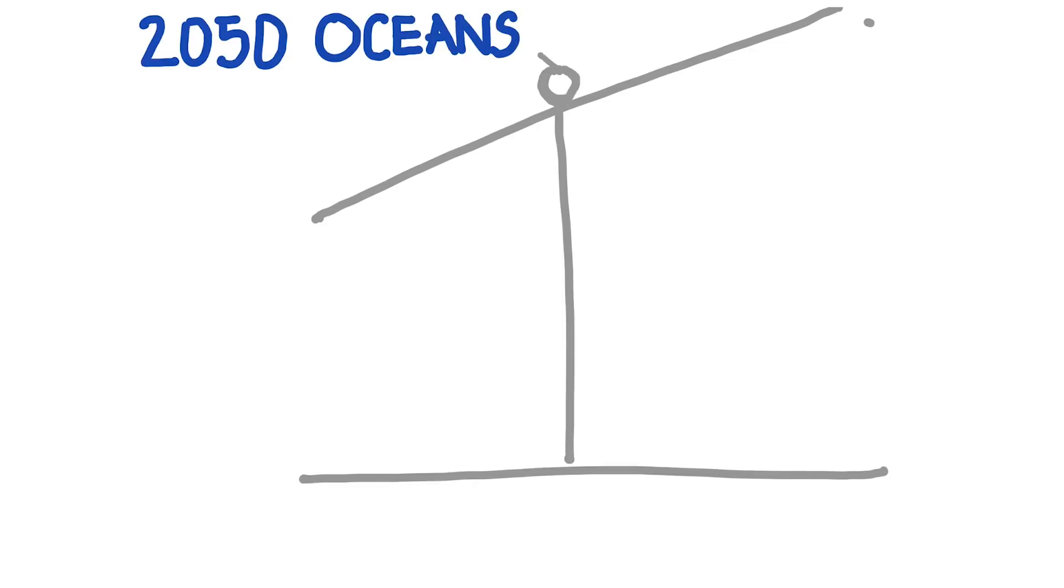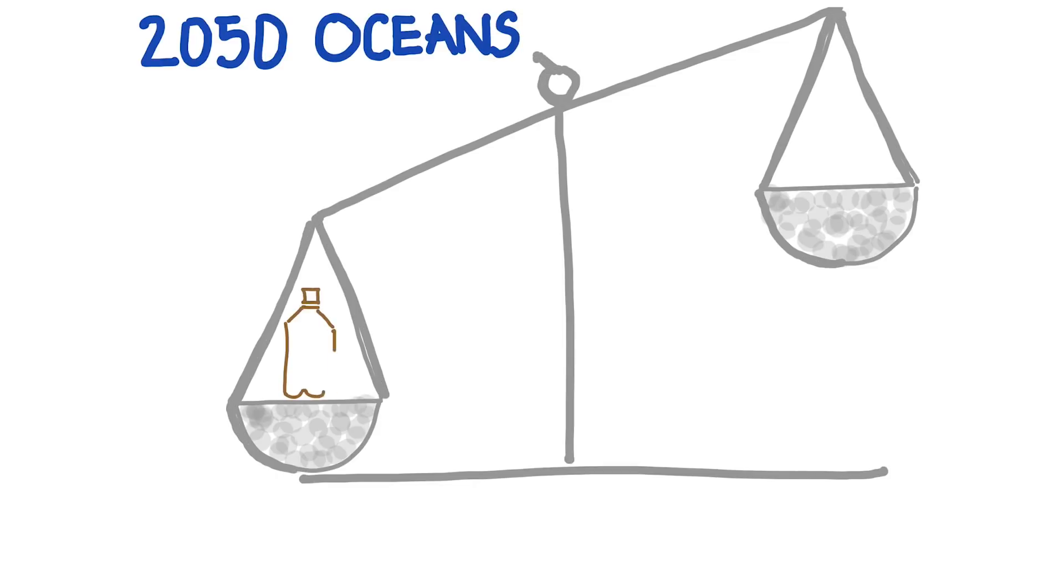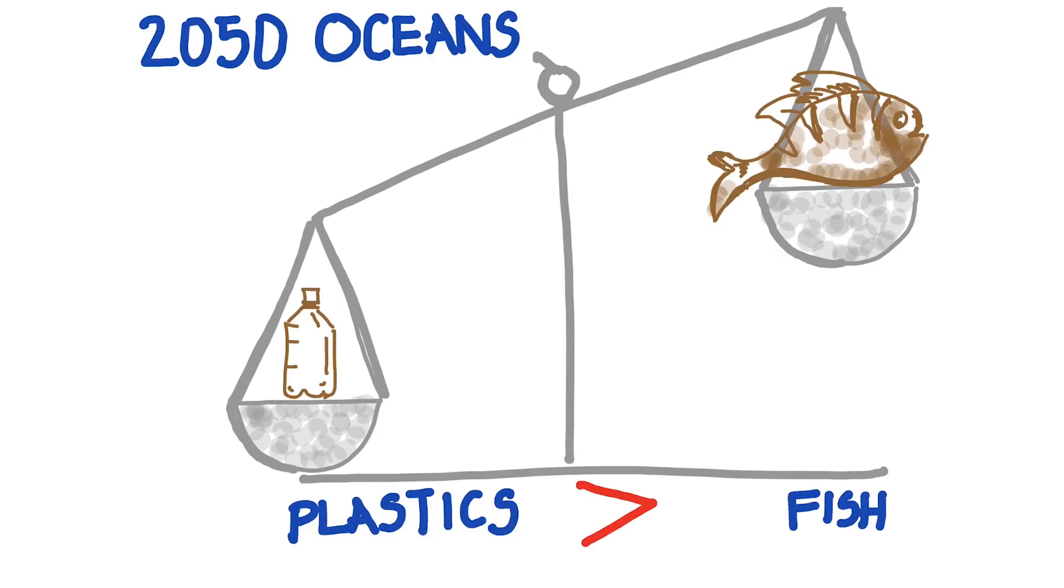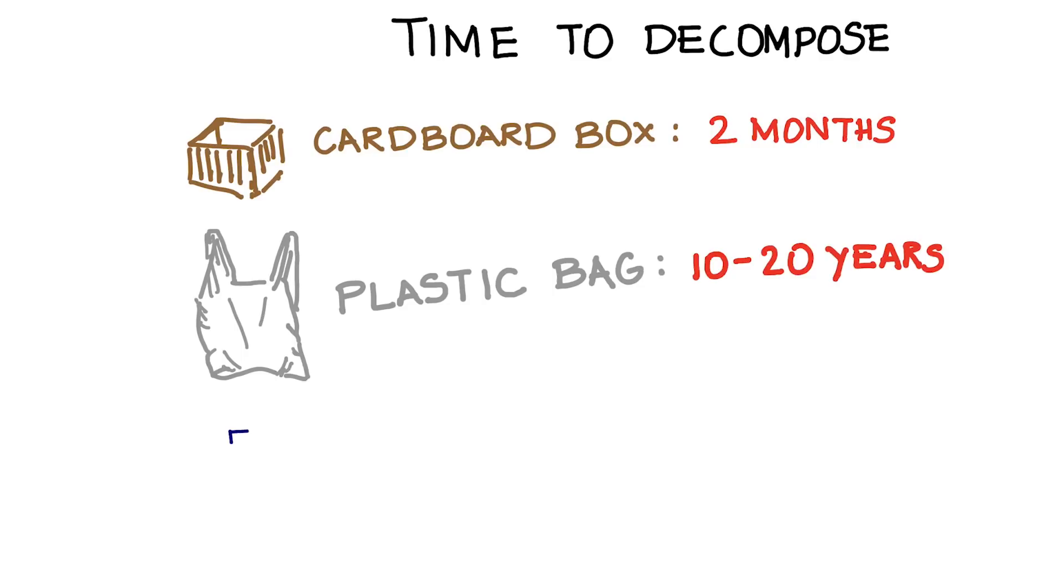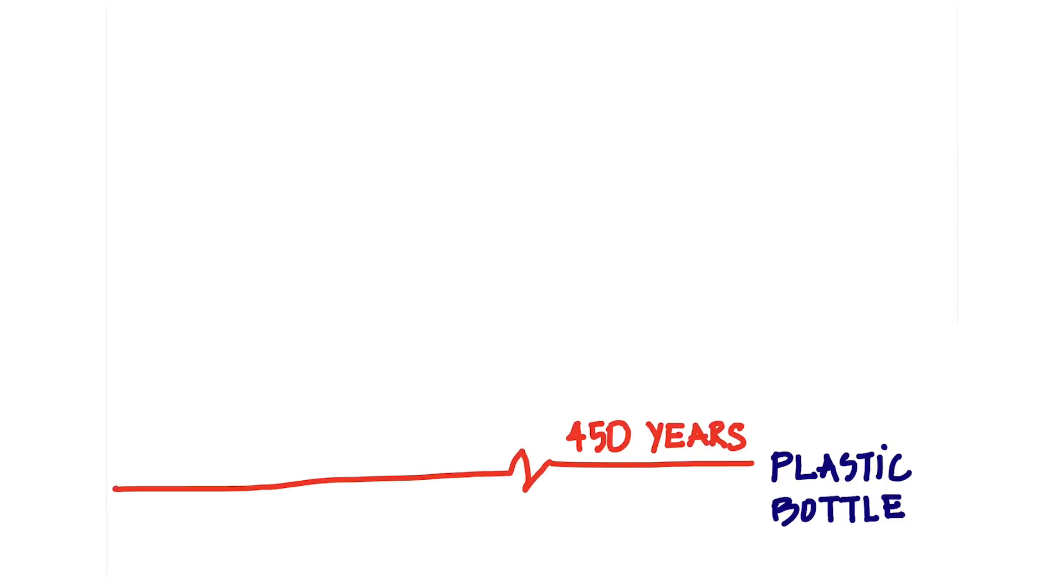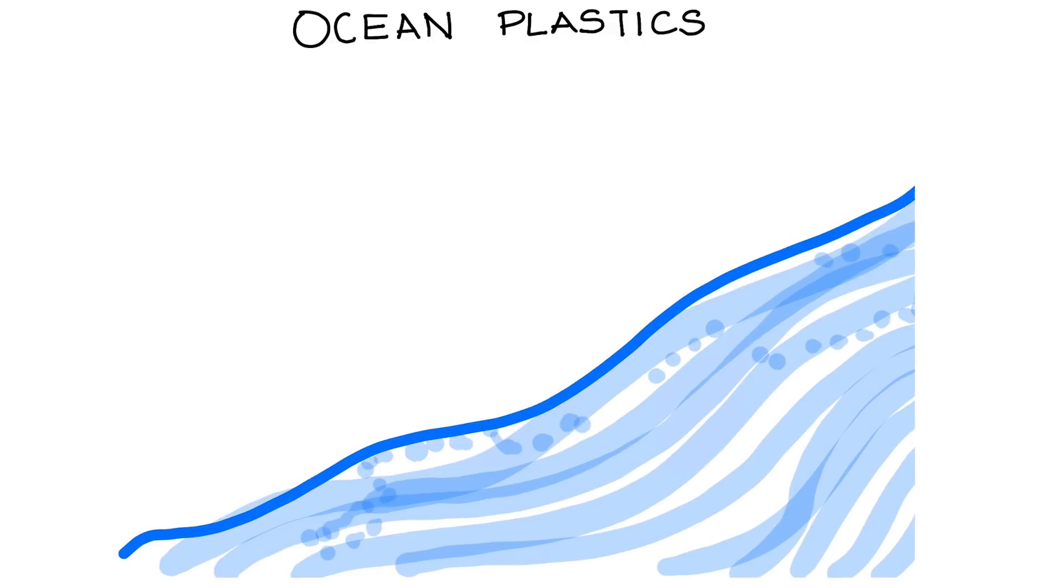By 2050, we'll have more plastic in all of our oceans than fish. And what hurts even more is what happens to the plastic once it enters the oceans. A basic plastic bag can take 10 to 20 years to decompose, and a plastic bottle, that can take about 450 years to decompose, affecting not just us, but more than our next 15 generations of descendants.